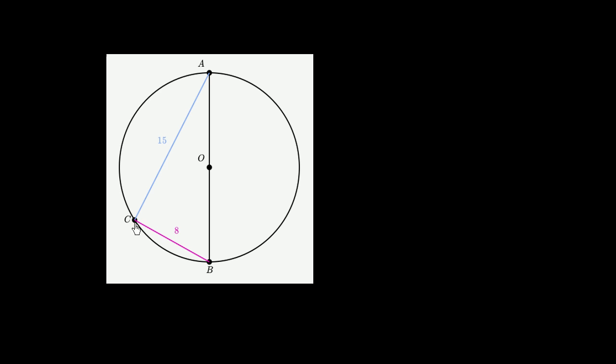We could look at this angle right over here, angle C, and think about it is an inscribed angle, and think about the arc that it intercepts. It intercepts this arc right over here. This arc is exactly half of the circle.